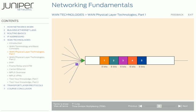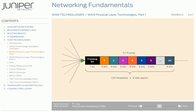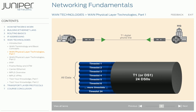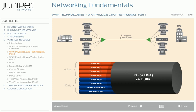So if we do the math, we'll see that 24 time slots times 8 bits equals 192 bits. Add the extra framing bit, and you get 193 bits, which constitutes a single T1 frame. If this process happens 8,000 times per second, then 193 multiplied by 8,000 equals 1.54 megabits per second. A T1 line provides a customer with a dedicated connection from one location through the WAN carrier's network to a second location. Customers have a choice of allocating all of the time slots for data, or all for voice, or any combination of voice and data.